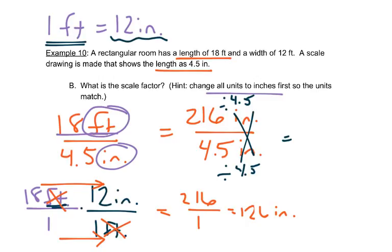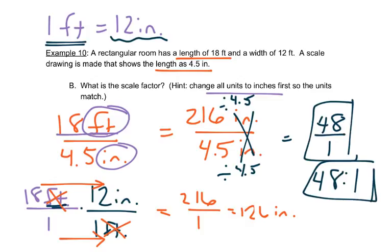So 216 divided by 4.5 is 48, and 4.5 divided by 4.5 is 1. So we have a scale factor of 48 to 1. That means the room is 48 times as big as the drawing.